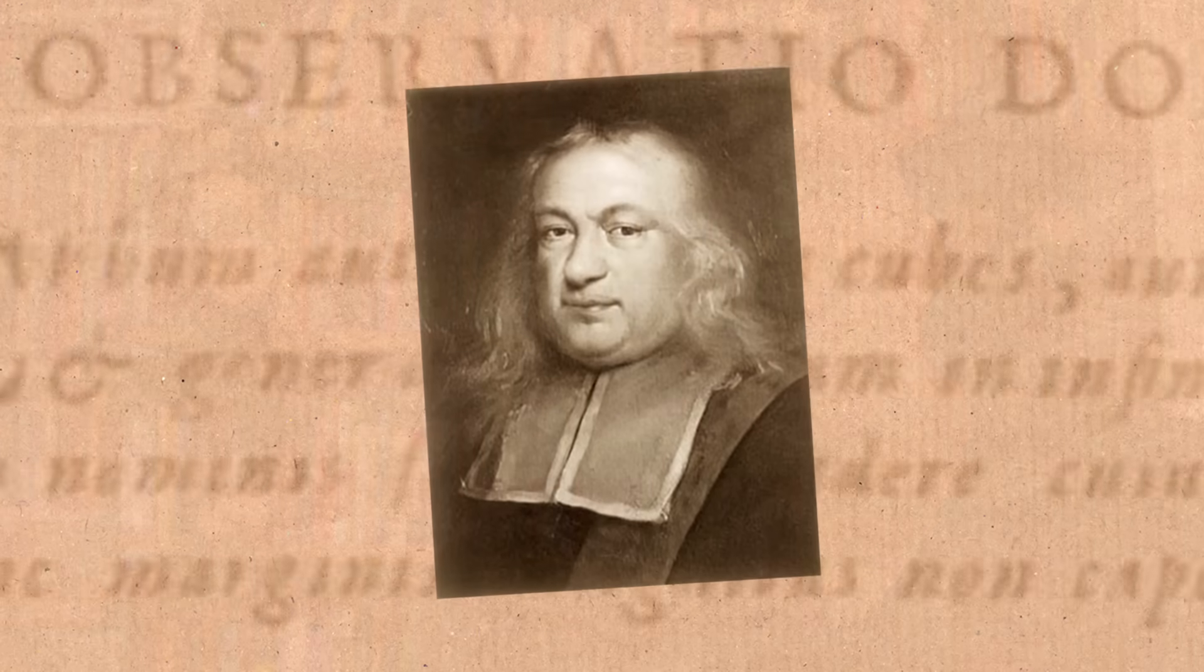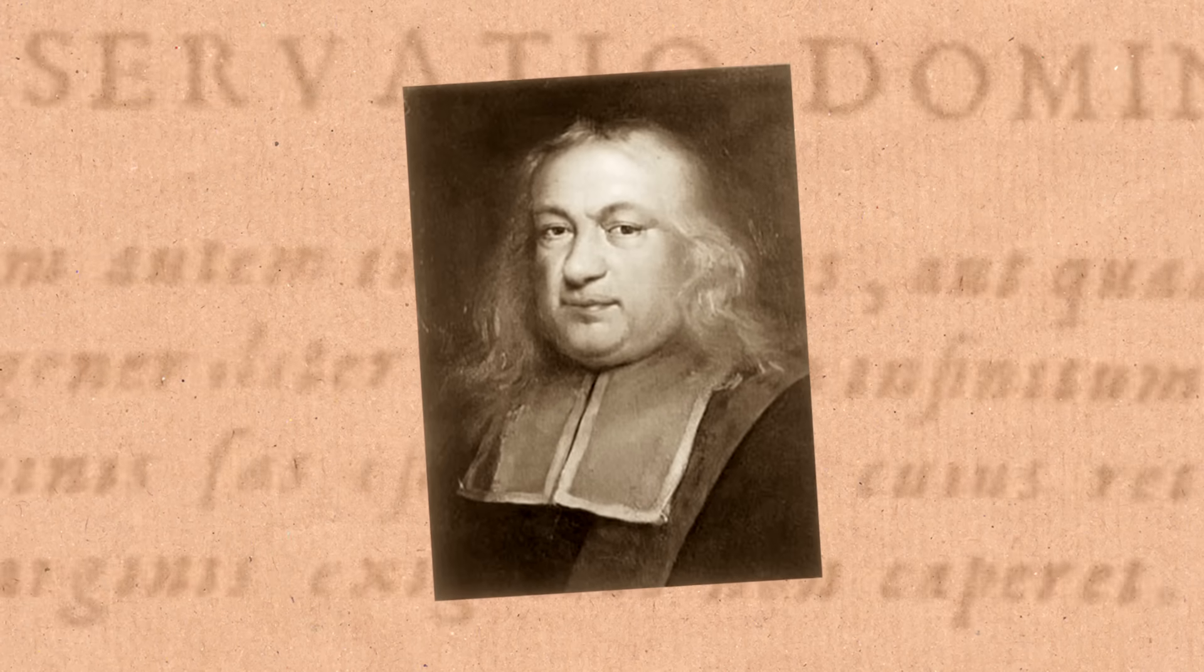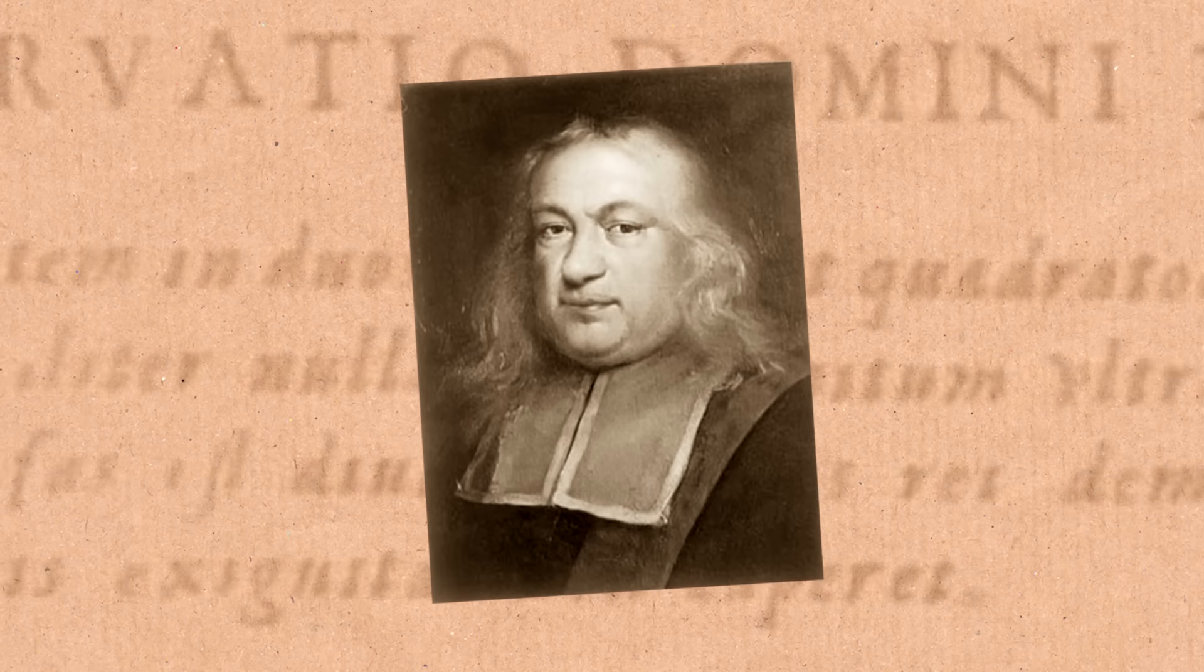I think the most likely explanation is that Fermat thought he had a proof. Because he was working on his own and because he didn't show this proof to anybody else, nobody could tell him, oh, there's a mistake there. You know, line three has got something wrong with it.